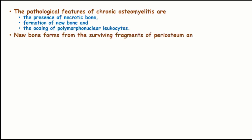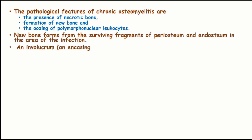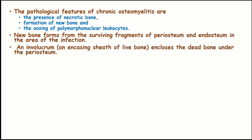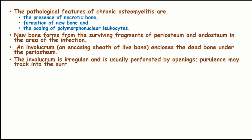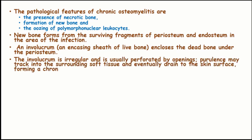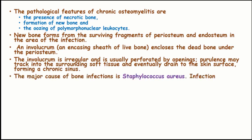The new bone forms from the surviving fragments of the periosteum and endosteum in the areas of infection. An involucrum, which is an encasing sheath of live bone, encloses the dead bone and the periosteum. This involucrum is irregular and usually perforated by openings; pus may track into the surrounding soft tissue and eventually drain to the skin surface, forming a chronic sinus.